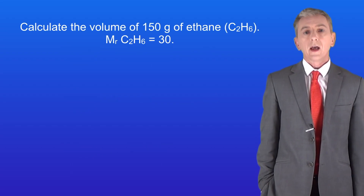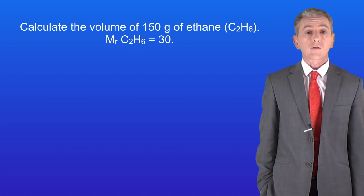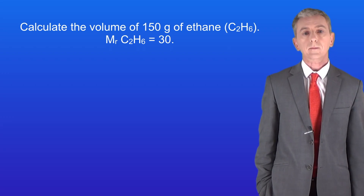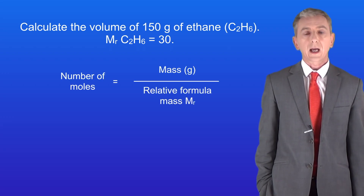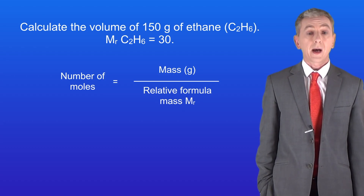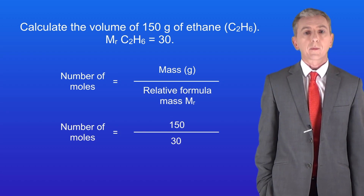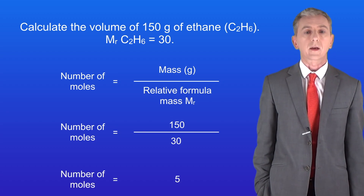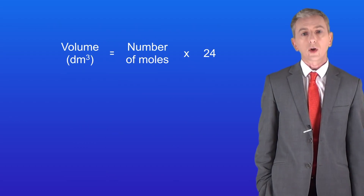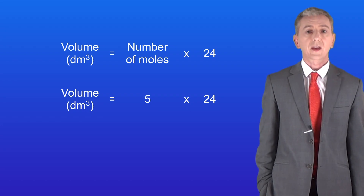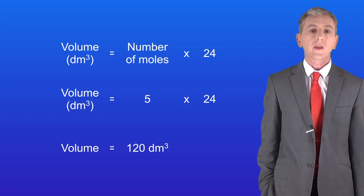Here's another example for you to try: calculate the volume of 150 grams of ethane. The relative formula mass of ethane is 30. Pause the video now and try this yourself. First we calculate the number of moles of ethane: 150 divided by 30 tells us that we've got 5 moles of ethane. To calculate the volume we multiply the number of moles by 24: 5 multiplied by 24 gives us 120 decimetres cubed of ethane.